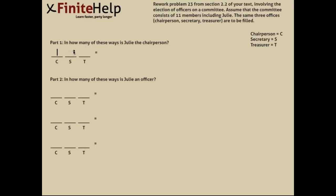For the next slot, we look at how many people we have left out of the 11 members, and since we already used Julie, there are 10 left. And then now we only have 9 left. And you simply multiply across. And that gives you 90. And that's the number of ways to select Julie as the chairperson.